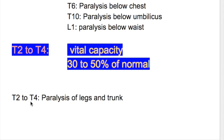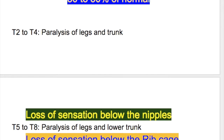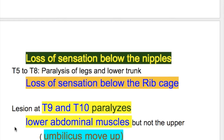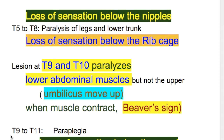Thoracic 2 to thoracic 4 produces paralysis of the legs and trunk and loss of sensation below the nipple. Thoracic 5 to thoracic 8 produces paralysis of the lower limbs and loss of sensation below the rib cage. A lesion at thoracic 9 and 10 paralyzes the lower abdominal muscles but not the upper, so when the muscle contracts, the umbilicus moves up — this is known as Beevor's sign. A lesion at thoracic 9 to 11 produces paraplegia and loss of sensation below the navel, and a lesion at thoracic 11 to lumbar 1 produces paraplegia and loss of sensation in the hip and legs.